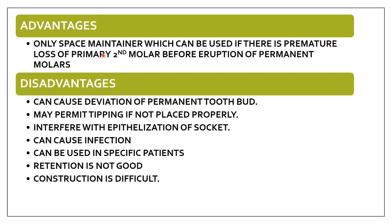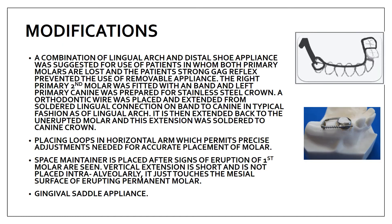The main advantage of the distal shoe is that it is the only space maintainer that can be used when there is premature loss of the primary second molar before eruption of the permanent molar. Disadvantages include: possible deviation of the permanent tooth bud if not properly fabricated, risk of tipping, interference with epithelialization of the socket, risk of infection due to its intra-alveolar nature, poor retention, and difficult construction.